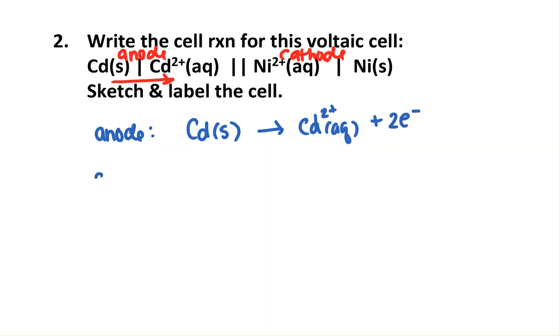And for the cathode, it gives me the order right there. I'm going to put zeros over my solids. And it looks like I need two electrons here as well.